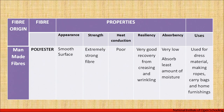Polyester fiber has a smooth surface and is also a strong fiber. It is a poor conductor of heat. Its resilience is very good — good recovery from creasing and wrinkling, meaning you don't need to iron a lot. Absorbance is very low. Uses include dress material, ropes, carry bags, and home furnishings such as sofa covers and curtains.